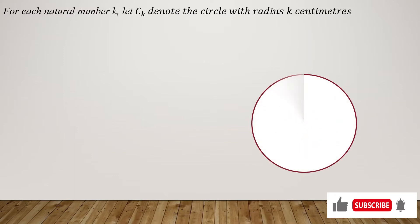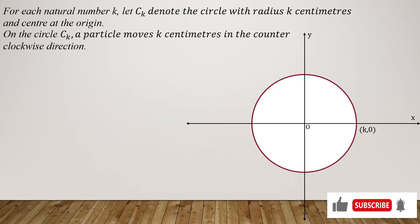Here is the question: For each natural number k, let Ck denote the circle with radius k centimeters and center at the origin. So we have a circle with x and y axis, and center at the origin.